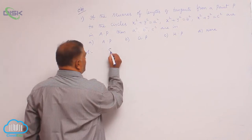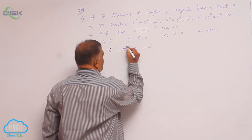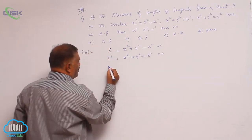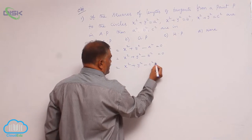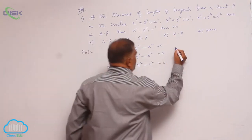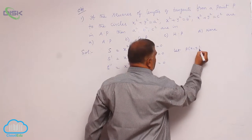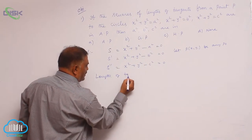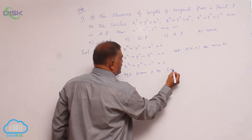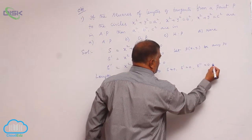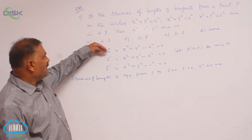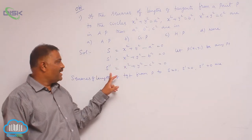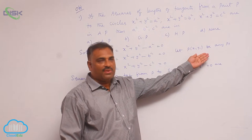Assume S = x² + y² − a² = 0, S' = x² + y² − b² = 0, and S'' = x² + y² − c² = 0. Let P(x₁, y₁) be any point. We require the length of tangent from P to each of the three circles S = 0, S' = 0, and S'' = 0.